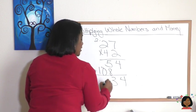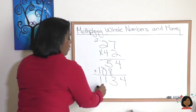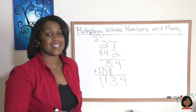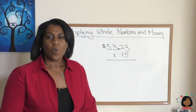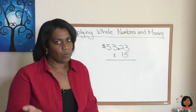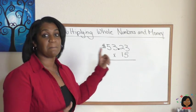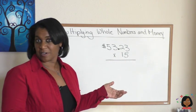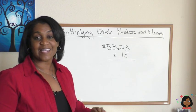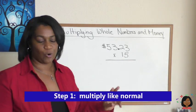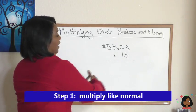How does this work for money? Here's a regular multiplication problem, but we do have some money involved. The rule is: go ahead and multiply like normal, so let's do that first.